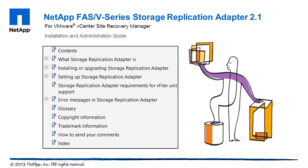Before installing the SRA, take a moment to read through the installation and administration guide for SRA 2.1. The guide covers all the required procedures, from preparing your NAS and SAN environments, replication from the protected to recovery site using SnapMirror, installing and configuring the SRA inside of vSphere, and lastly, a comprehensive list of error messages for troubleshooting.